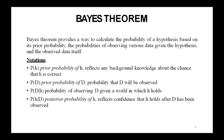In machine learning, we are primarily interested in determining the best hypothesis from the hypothesis space H, given the observed training data capital D. This is an important objective. One way to specify what we mean by the best hypothesis is to demand the most probable hypothesis given the data D, plus any initial knowledge about the prior probabilities of the various hypotheses in H. Bayes theorem provides a direct method for calculating such probabilities.